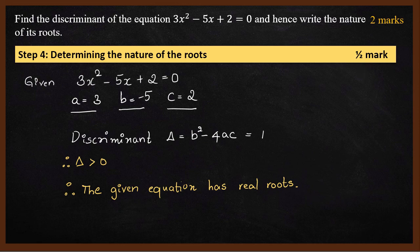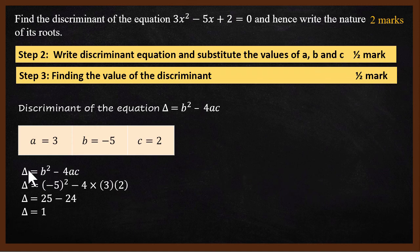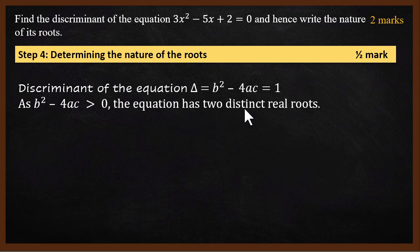So we solved this problem in 4 steps. First step, we found the abc values. Next step, we wrote the formula and found its value, getting one mark. Last step, we determined it has two distinct real roots.